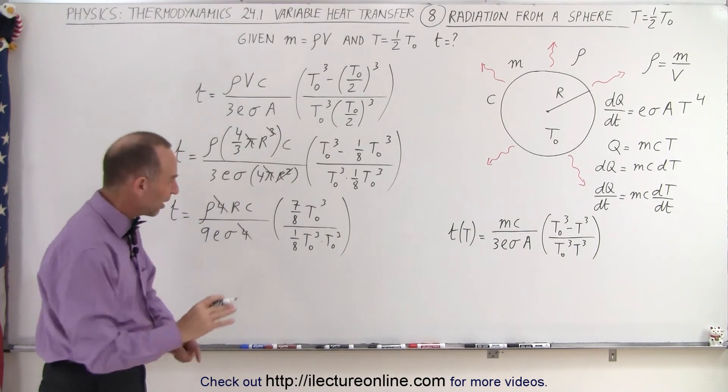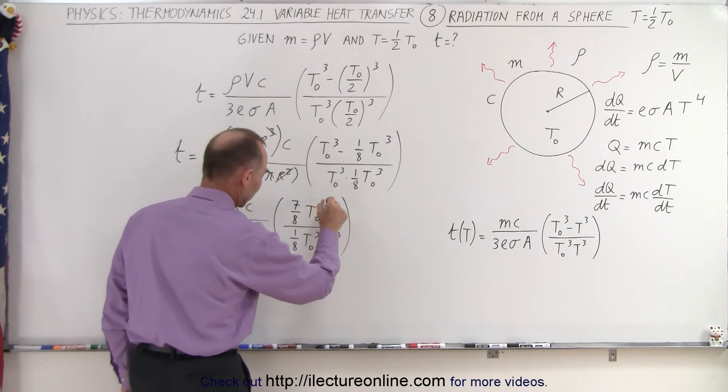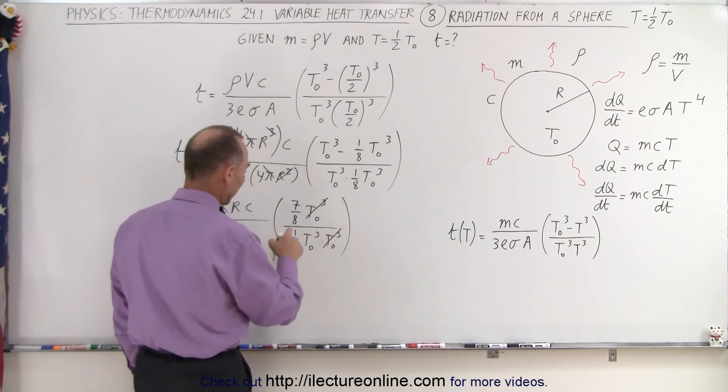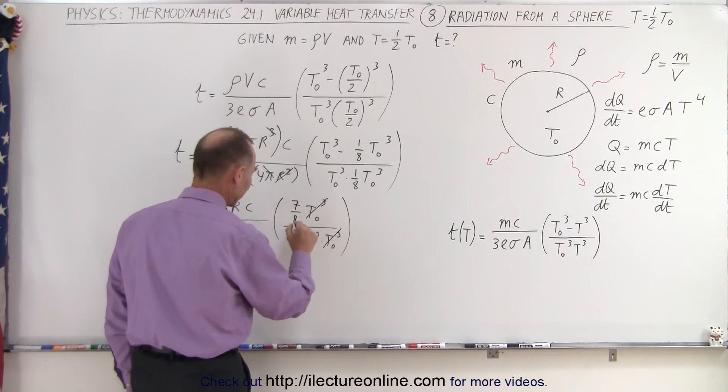Okay, the reason I wrote that is because it's easy to see how we can then additionally simplify things. So this simplifies with this, and we have 1 over 8 divided by 1 over 8, so that cancels out.